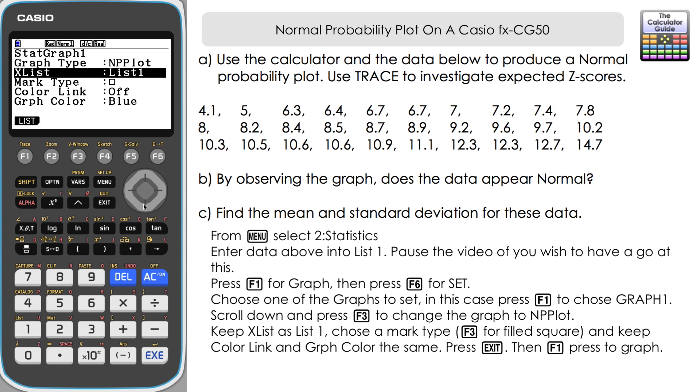You can see now that the other inputs on the screen have changed for the normal probability plot. If we scroll down X list, that's the list we want to take the X variable from. Well, that is going to be the data that we inputted in list one. So that's correct.